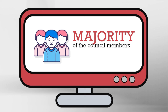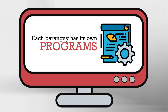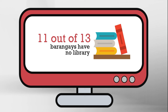Here are the results of the study. First, the majority of the council members were not aware of RA 1425. Second, each barangay had its own programs, both the Barangay Sanggunian and Sangguniang Kabataan; however, the programs being implemented at the barangay level were based on priority programs identified by the local government. Third, the study revealed that 11 out of 13 barangays had no library. Most council members were also not aware that Section 3 of RA 1425 mandates that every barangay or unit in the municipality or city must have in their library a copy of the two books of Dr. Jose Rizal.